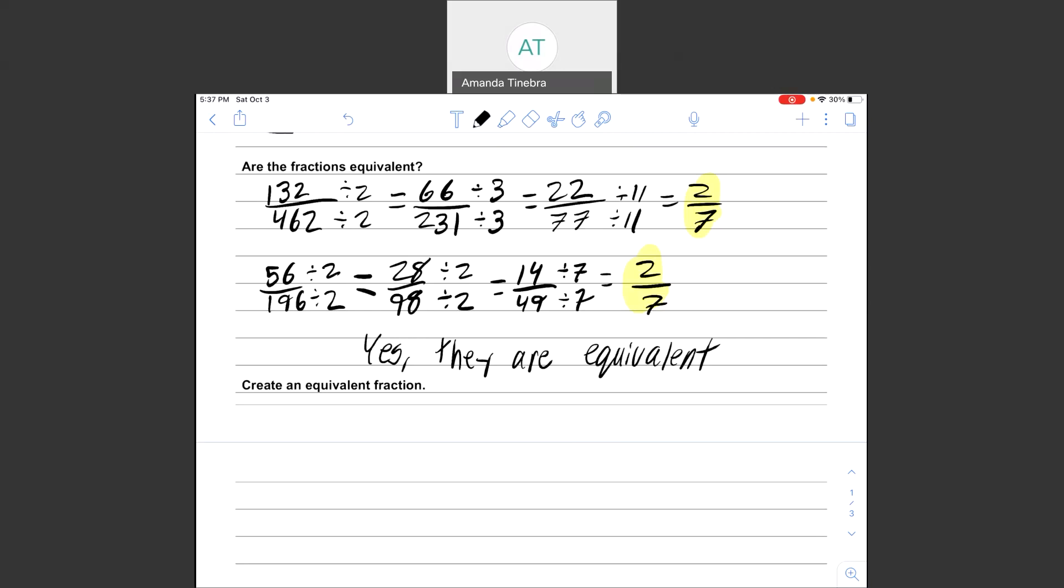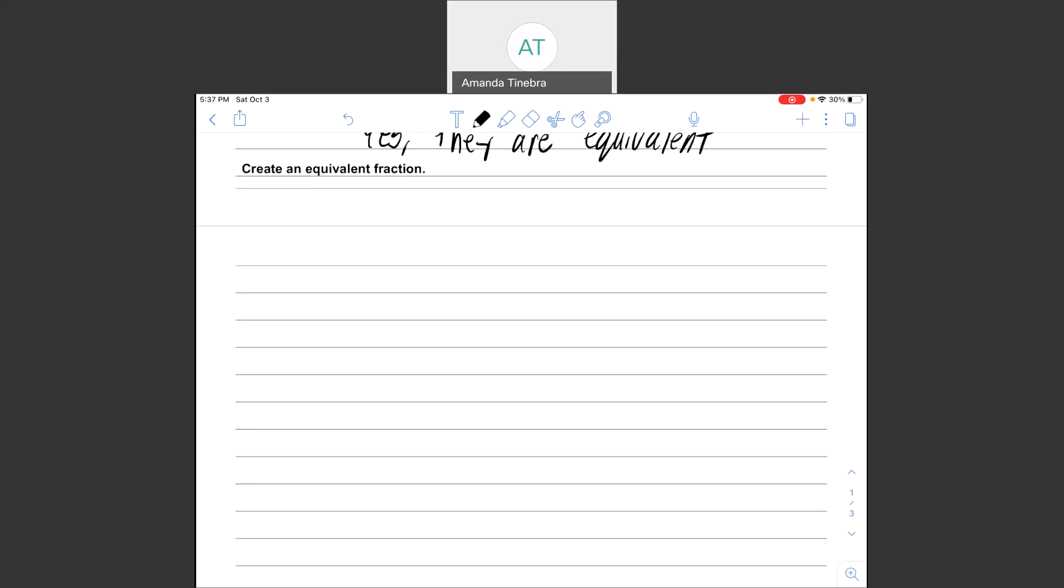Last type of problem we need to be able to do is creating an equivalent fraction, and that looks like this. Let's say I told you that 18 over 24 was equivalent to something over 12. Well, we know that to get equivalent fractions, it means that we can either multiply or divide the top and bottom by the same number. As long as we're keeping things the same on both the top and the bottom, we're going to get equivalent fractions. So right here, going from 24 to 12, I know that 24 divided by 2 is 12.